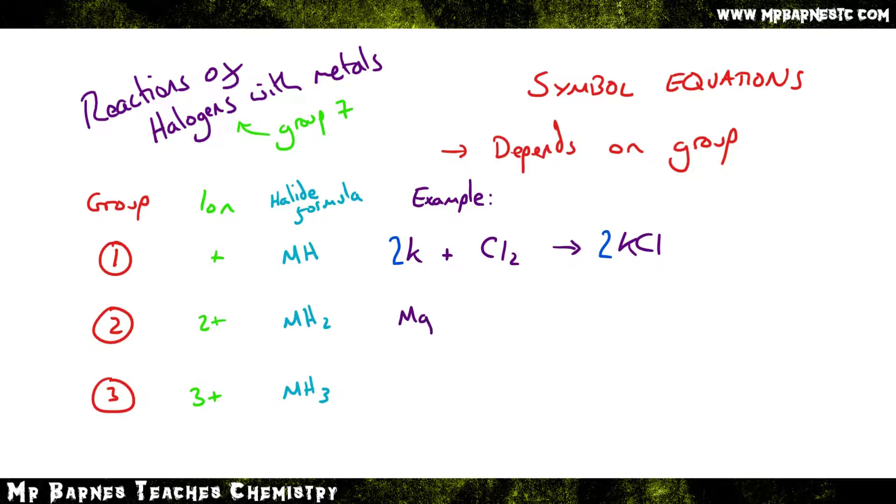If we move on to group 2, so I'm going to react magnesium with chlorine this time, and it's going to make magnesium chloride. We have the formula MH2, so I have 2 of my halogens, so it becomes MgCl2. Therefore, it is already balanced. I've got 1 magnesium and 2 chlorines on either side.